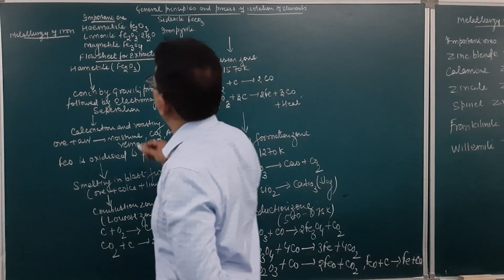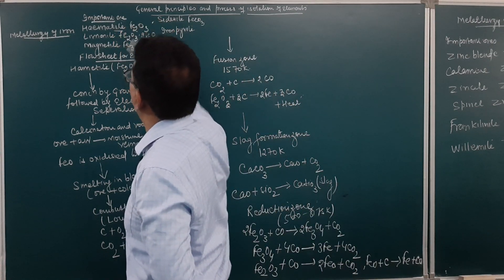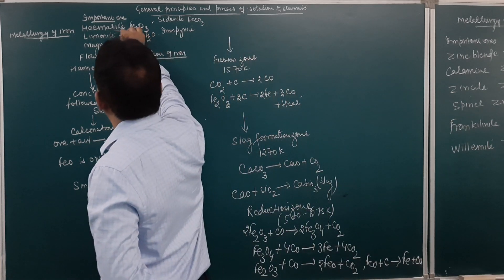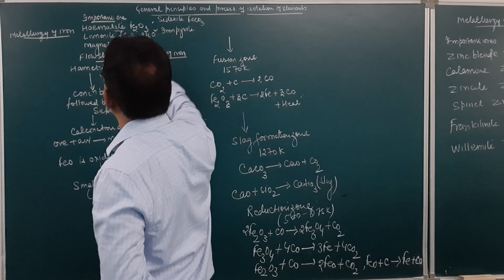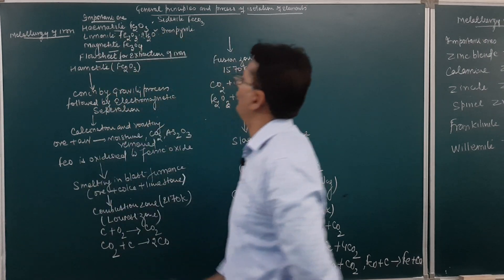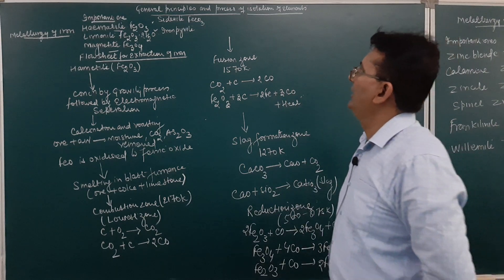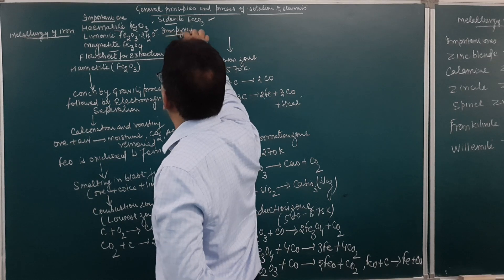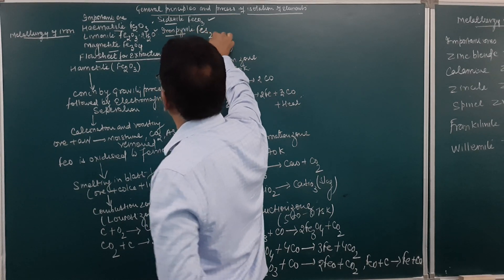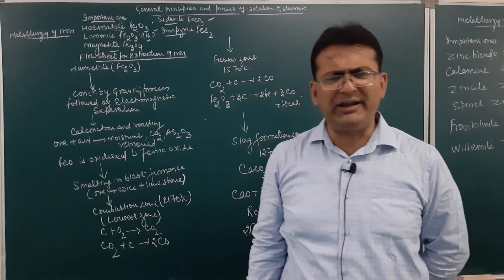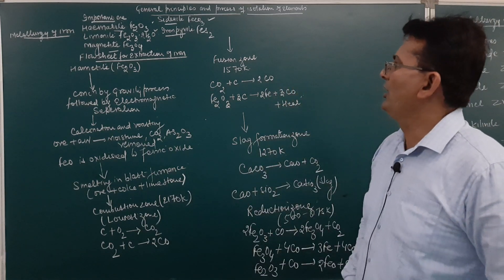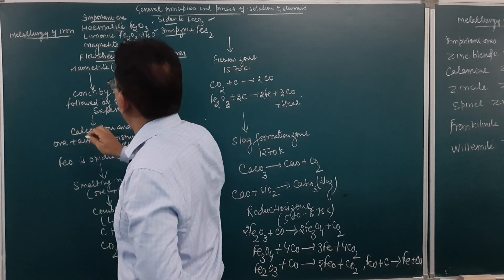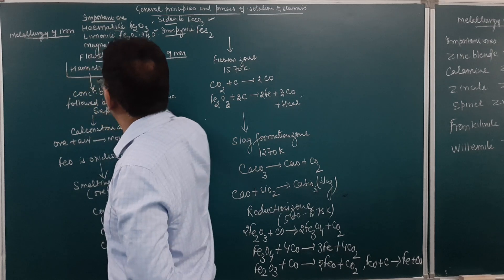The important ores of iron are hematite (Fe₂O₃), limonite (Fe₂O₃·2H₂O), and magnetite (Fe₃O₄). There are various important ores of iron, and we will be trying to extract iron from hematite ore, whose formula is Fe₂O₃.